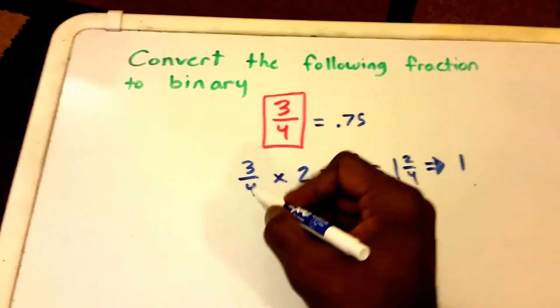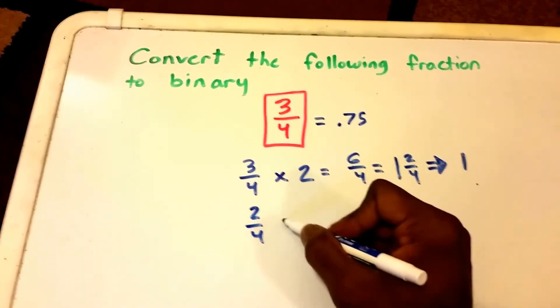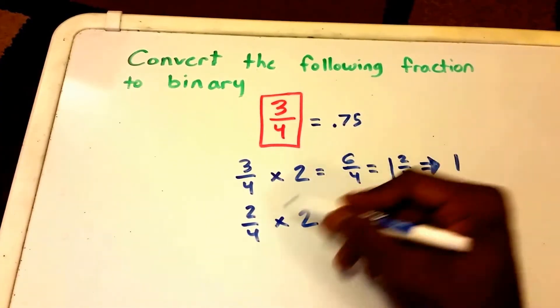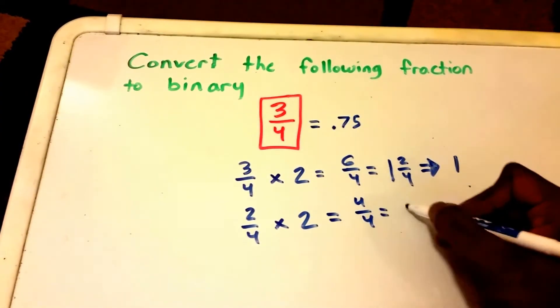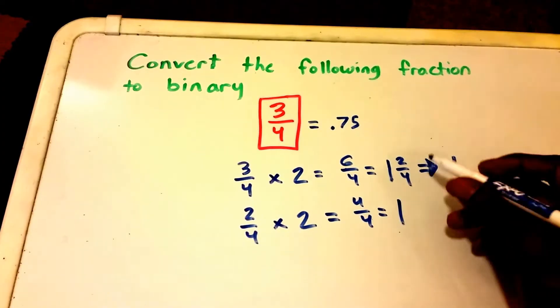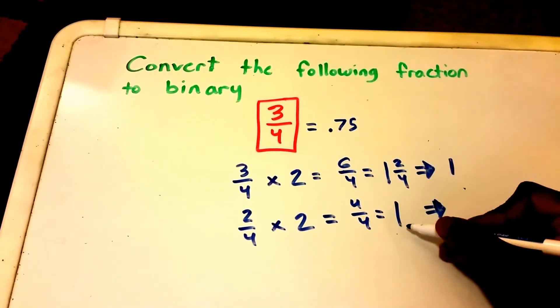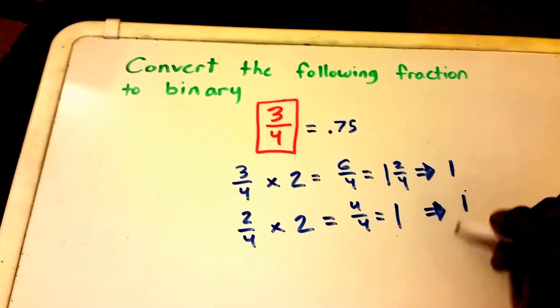And then we take the remainder which is 2 fourths and multiply that by 2 to get 4 fourths which is equal to 1. And we take the whole number of that and that becomes our second binary digit.